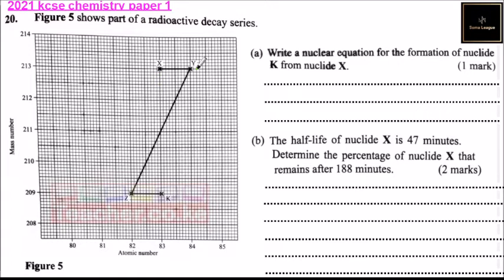Part (a) asks to write a nuclear equation for the formation of nucleide K from nucleide X. From X to K, there will be a loss of an alpha particle.